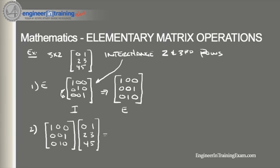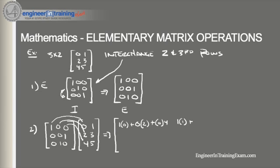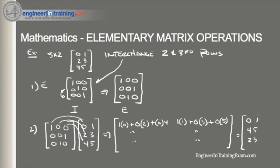Carrying out the matrix multiplication: the first element is 1×0 + 0×2 + 0×4 = 0, and the second element is 1×1 + 0×3 + 0×5 = 1. Completing the full multiplication, we end up with the new matrix: 0, 1, 4, 5, 2, 3. You can visually confirm that we indeed interchanged the second and third rows using the elementary row operation.